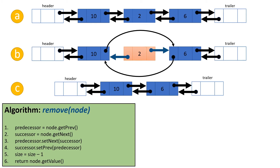The node before the one we're removing — we set its next reference to the successor, which is the node after the removal. And the successor's previous reference gets set to the node before the one we want to remove. We decrement the size, and then the algorithm returns the value of the node we removed. Going back to link list B, we're changing the references of the node before and after the node we want to remove. In link list C, since those references no longer exist, the node is gone.